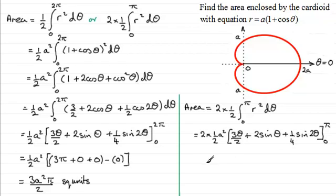When we clean this up, we've got 2 times a half a squared, well that's just a squared. If we substitute pi in first, we're going to get 3 pi over 2 for that term. The sine of pi, well that's zero. A quarter sine of 2 pi, that's zero.